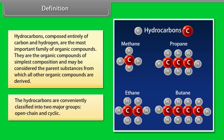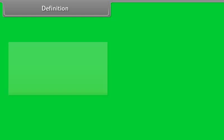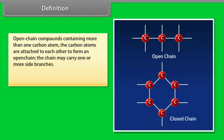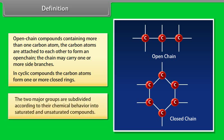The hydrocarbons are conveniently classified into two major groups: open chain and cyclic. Open chain compounds containing more than one carbon atom have carbon atoms attached to each other to form an open chain. The chain may carry one or more side branches. In cyclic compounds, the carbon atoms form one or more closed rings. The two major groups are subdivided according to their chemical behavior into saturated and unsaturated compounds.